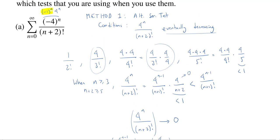We have a sequence which is eventually decreasing and which converges to 0. Therefore, the corresponding alternating series must converge by the alternating series test. So that is method one.